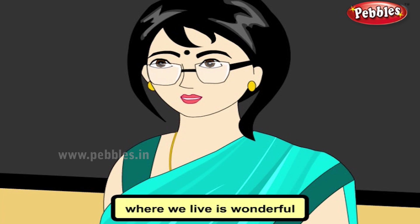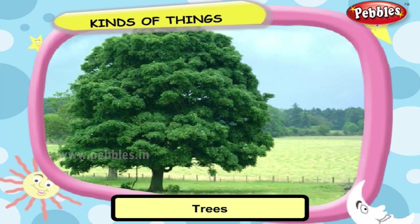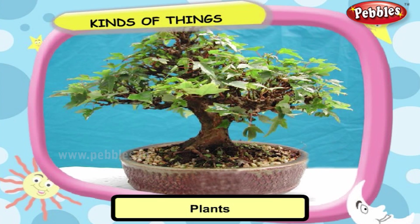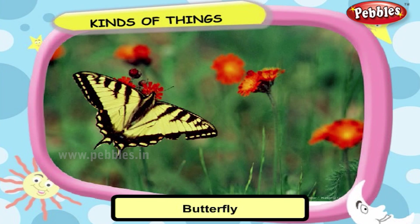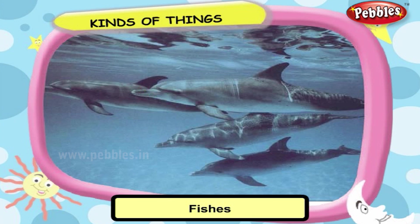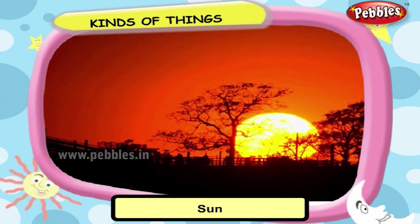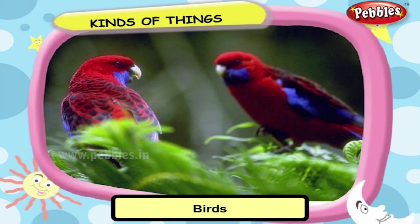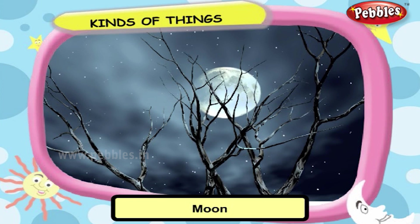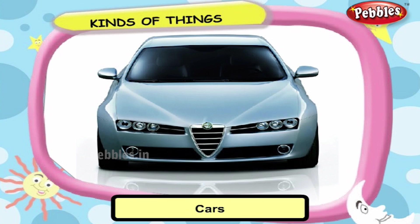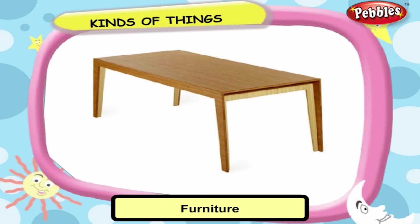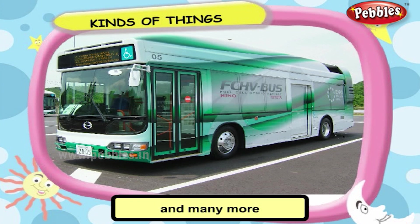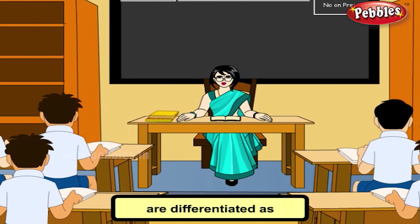This world where we live is wonderful and beautiful with many kinds of things such as trees, plants, butterfly, fishes, sun, birds, moon, cars, furnitures, buses and many more. These objects are differentiated as natural objects and artificial objects.